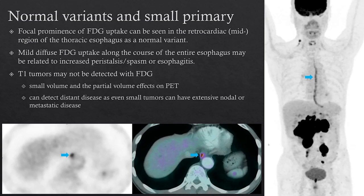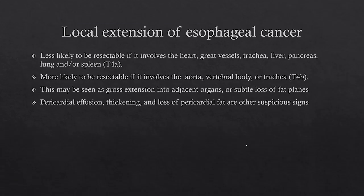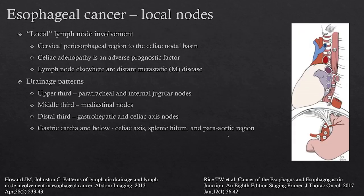Local extension of esophageal cancer: it is less likely to be resectable if it involves the heart, great vessels, trachea, liver, pancreas, lung, or spleen. It can also extend to the aorta, vertebral body, or trachea. For nodal extension, local spread tends to extend from the periesophageal region to the celiac nodal basis. Celiac nodes are usually associated with worse prognosis. Lymph nodes outside of this would be considered metastatic disease.